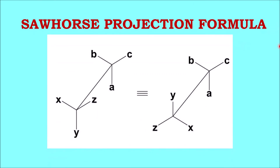Now let us look at the sawhorse projection formula. The sawhorse projection formula is represented as a line formula by looking at the molecule from a different perspective, and it gives a very good representation of the actual three-dimensional molecule. We can clearly see the front carbon with its three groups, and the line is the bond connecting the front carbon and the back carbon — which in the Newman projection formula was not visible. So this is kind of a better version of the Newman projection formula.